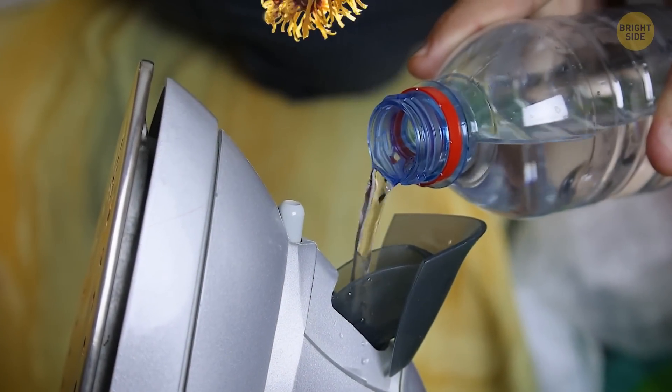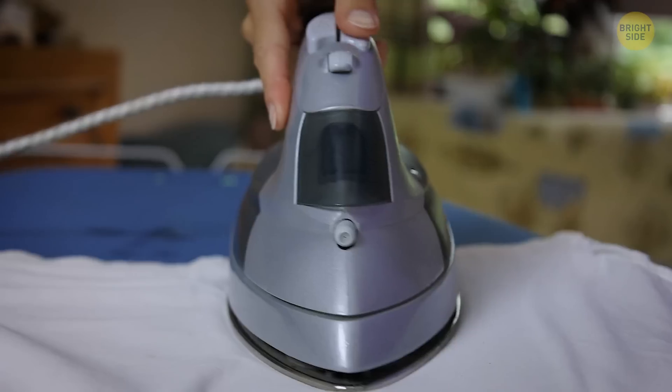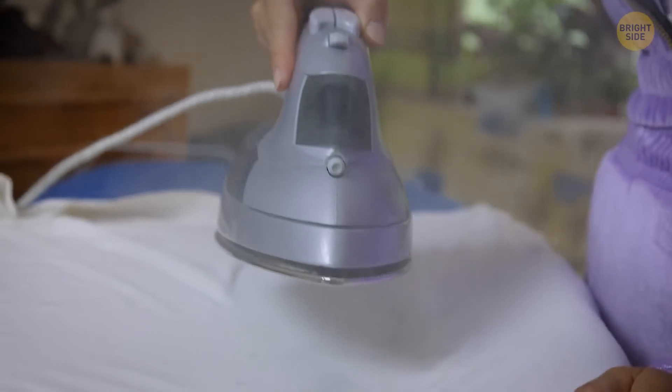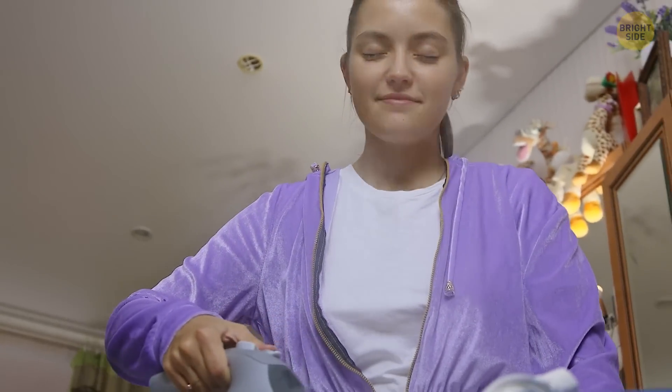Add witch hazel to the water fill in your iron, and as you're ironing your clothes, instead of the stale smell normally produced, you'll have a sweeter, fresher scent instead.